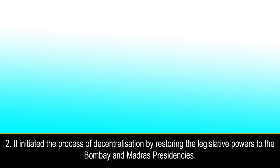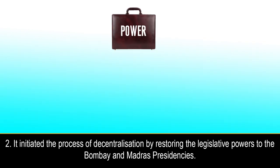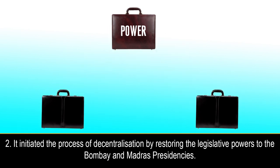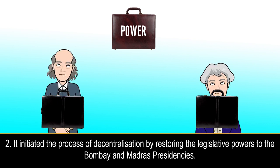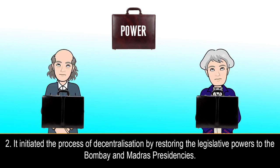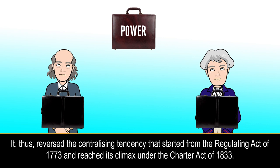Feature 2: It initiated the process of decentralization by restoring the legislative powers to the Bombay and Madras presidencies. It thus reversed the centralizing tendency that started from the Regulating Act of 1773 and reached its climax under the Charter Act of 1833.